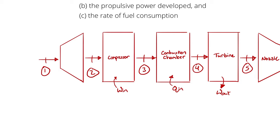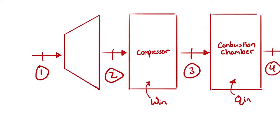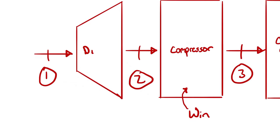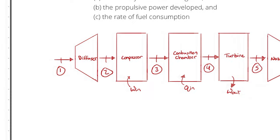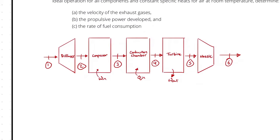We also consider that air is moving very quickly as it enters the engine and we want to slow it down. Since we're slowing the fluid down, we might as well convert that kinetic energy into enthalpy so that our compressor doesn't have to do as much work, and so the turbine doesn't have to reduce the fluid energy before it goes into the nozzle. So we add a diffuser to convert kinetic energy at the inlet into enthalpy.